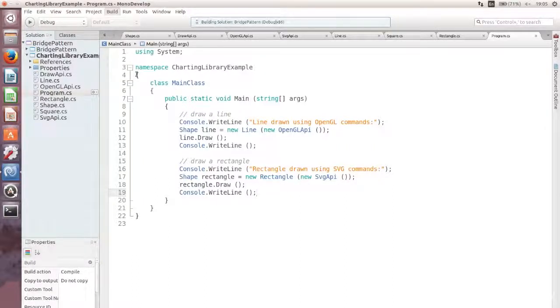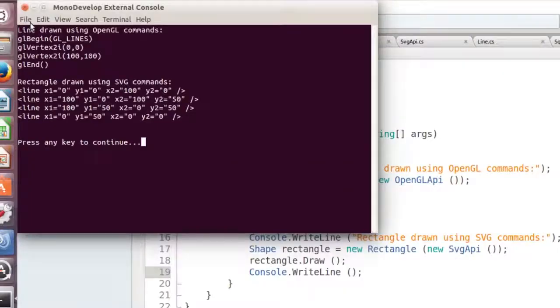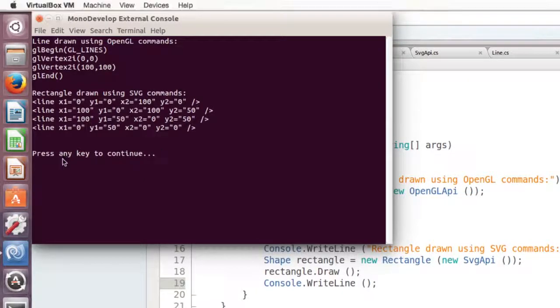Let me run the program so we can see what's happening. I'm compiling the code now and running the program. And there you go. One line drawn with OpenGL Vertex commands, and one rectangle drawn with SVG commands. Everything works.